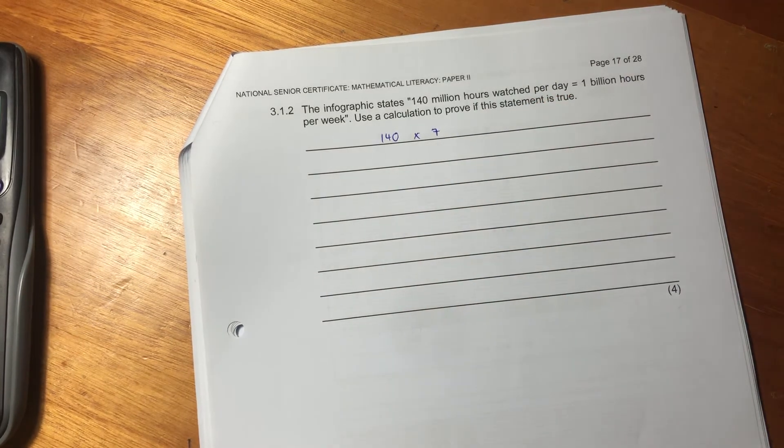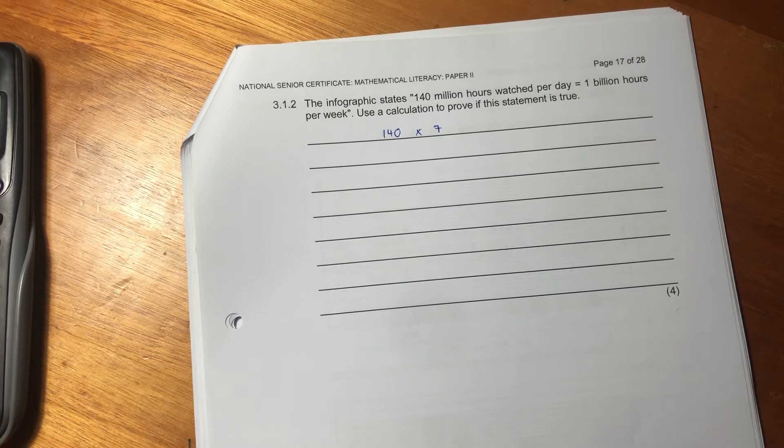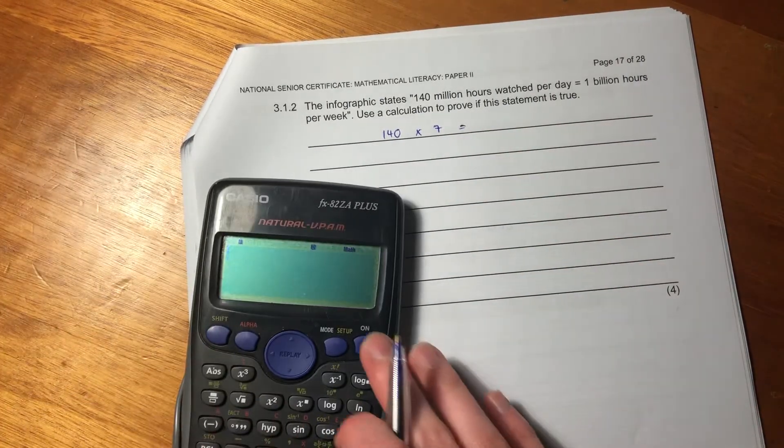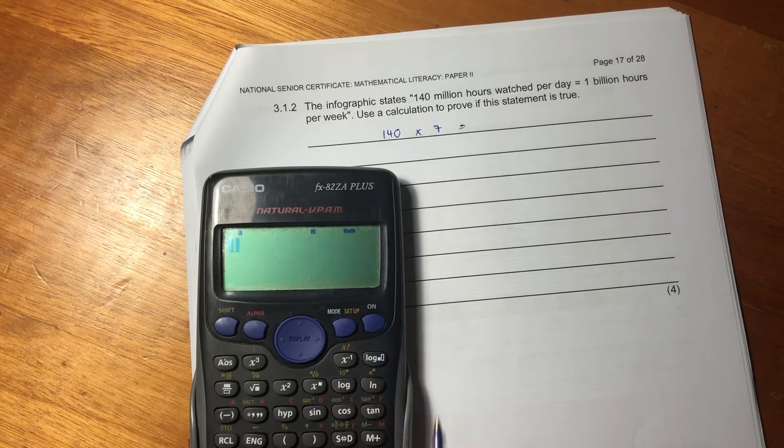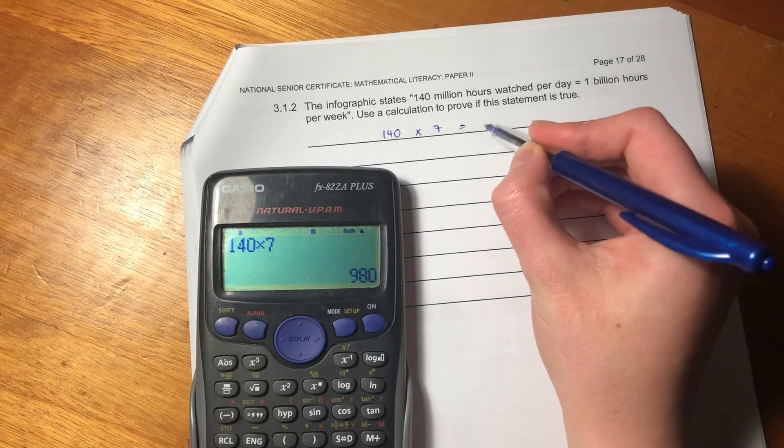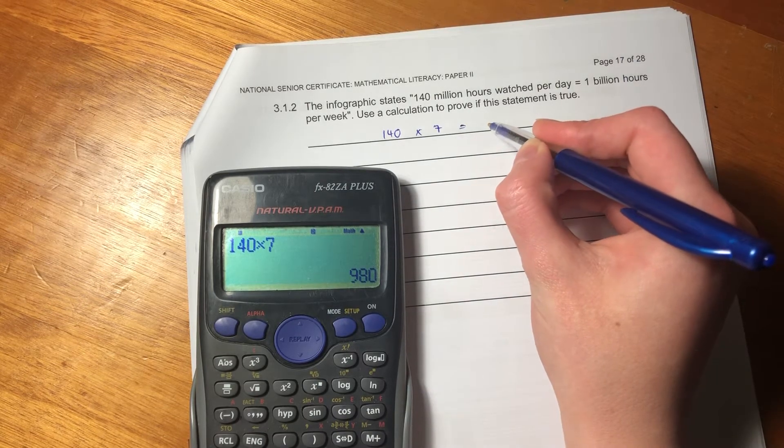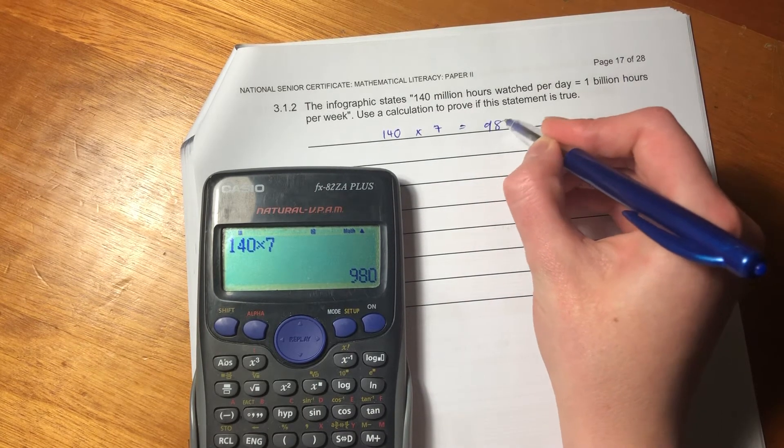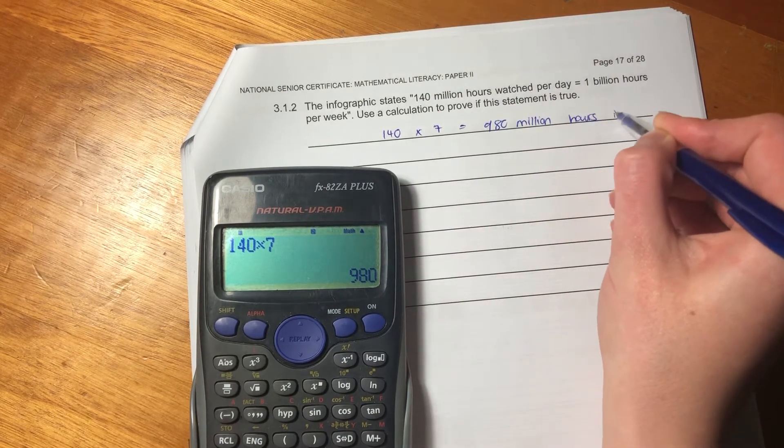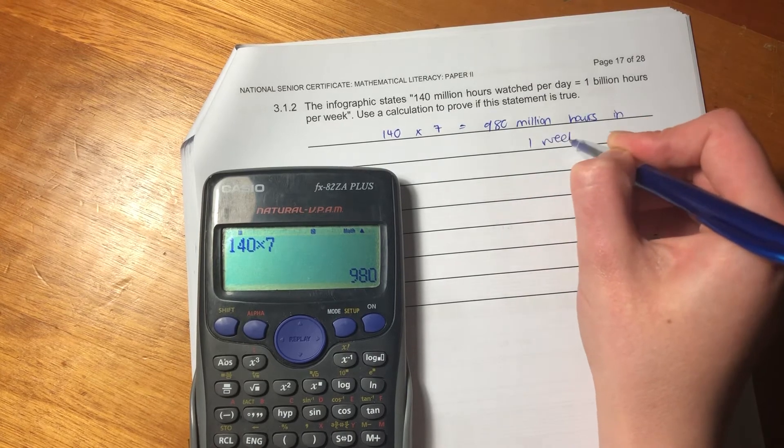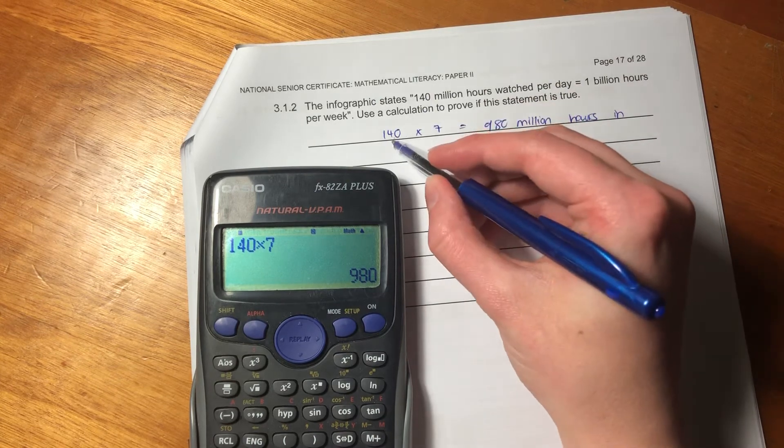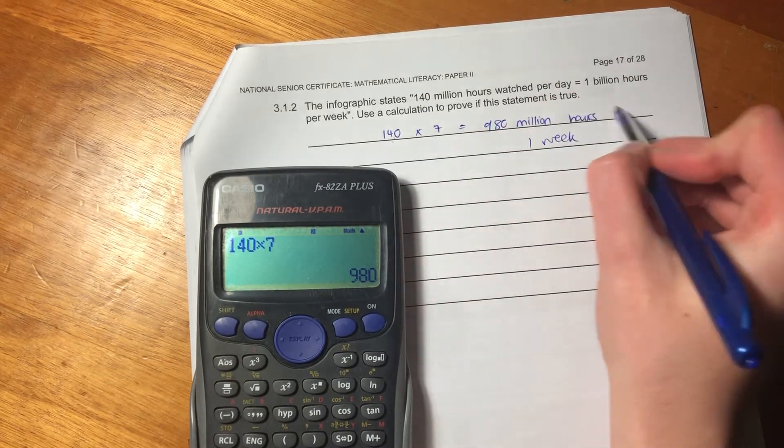So let's say what is 140 times 7? Now, you might be saying, Margie, it's 140 million, not 140. Yes, that is correct. But we can just write this answer in millions as opposed to putting in like so many zeros. It's a little bit easier to put into our calculator. So we get 980 million hours in one week. So why did I times it by 7? Well, the 7 days in a week. 140 million per day times by 7 to get to the number in a week.